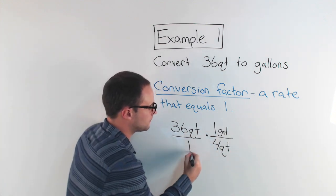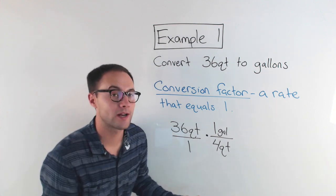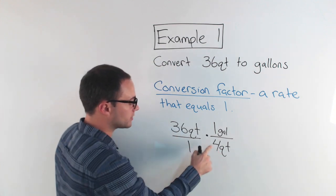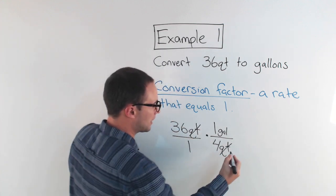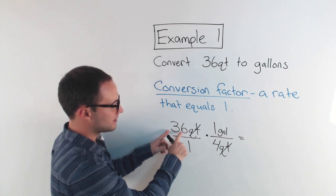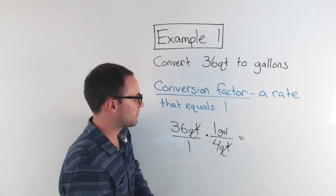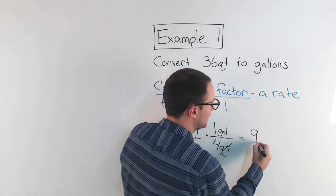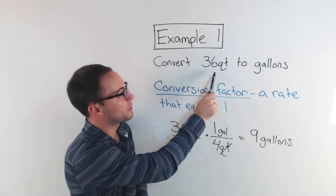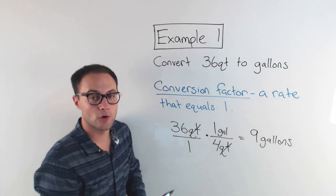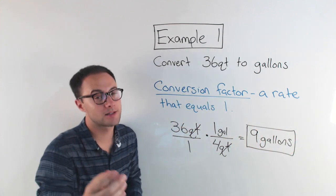I want to cancel out the quarts and just be left with gallons. So when I'm using my conversion factor, I'm going to put quarts in the denominator. Well, four quarts is equal to one gallon. If I do that, notice what happens to these quarts. Before we multiply fractions, we always try to simplify. Well, quarts over quarts, those would cancel out. So I'm left with 36 divided by 4 times 1 gallon. Well, 36 divided by 4 is just 9. 9 times 1 gallon is 9 gallons. So 36 quarts is equal to 9 gallons. Here's something to try on your own.